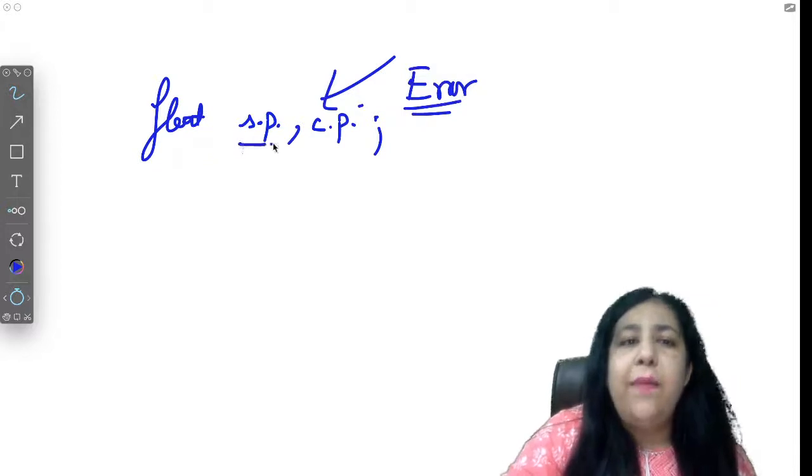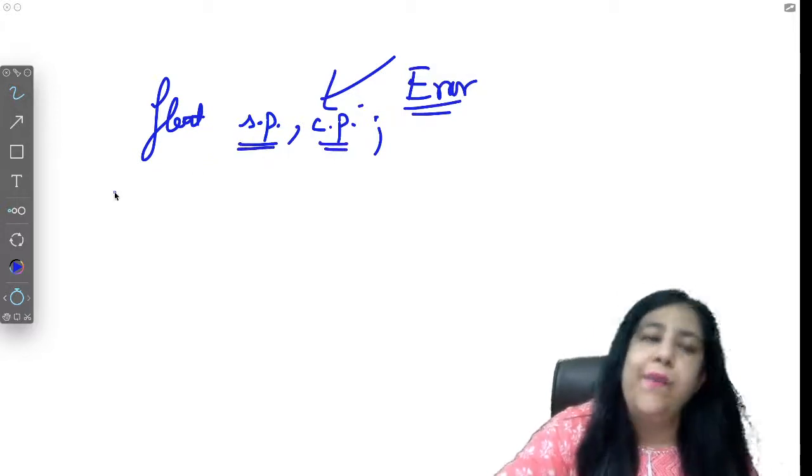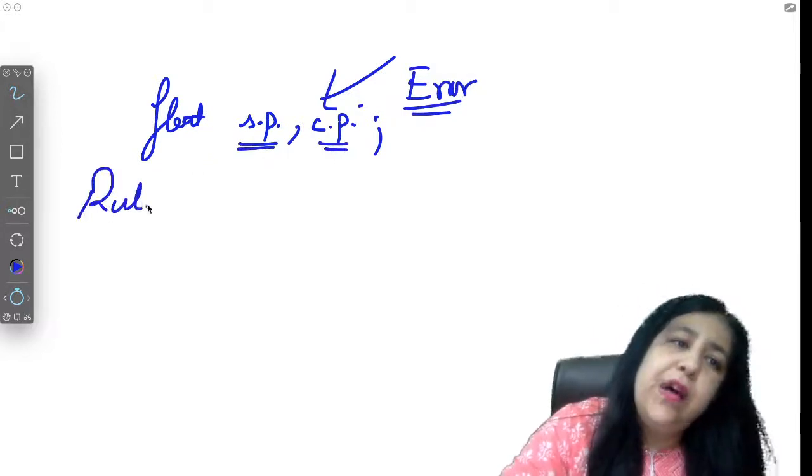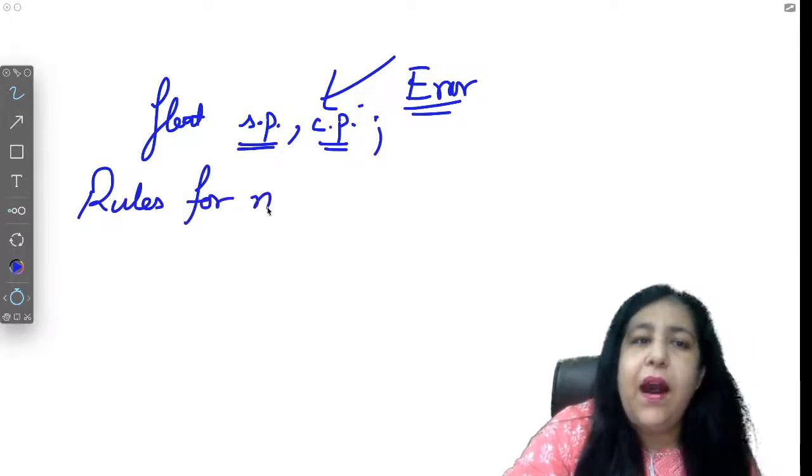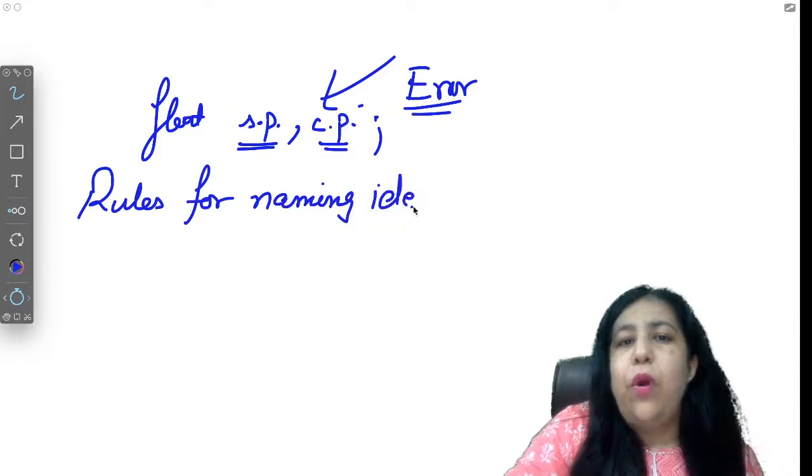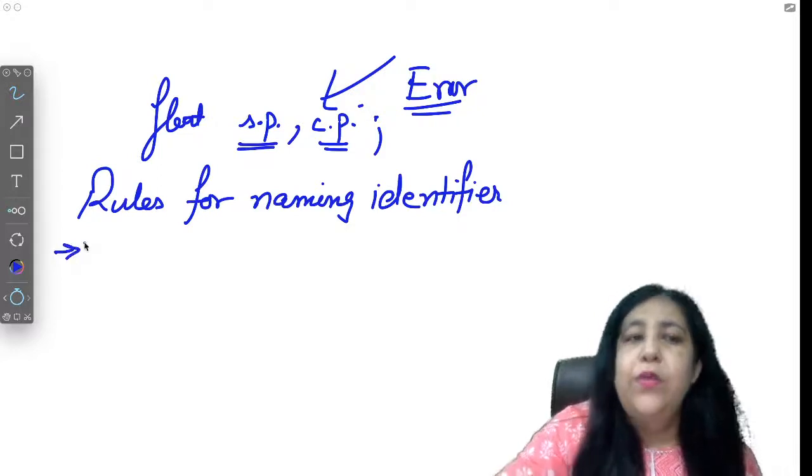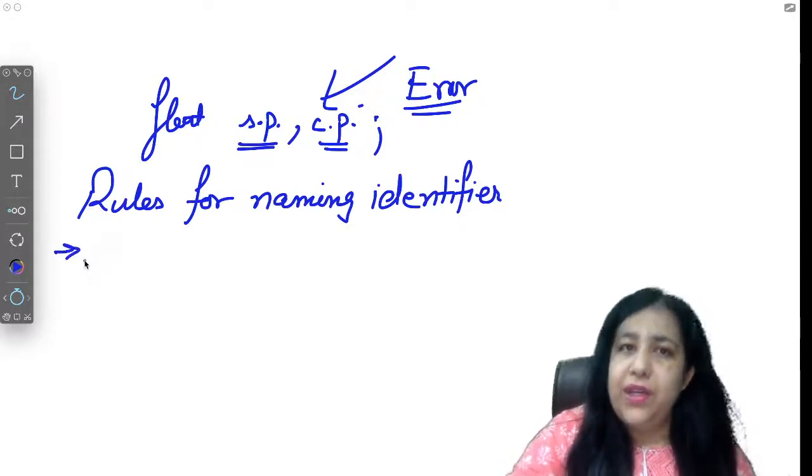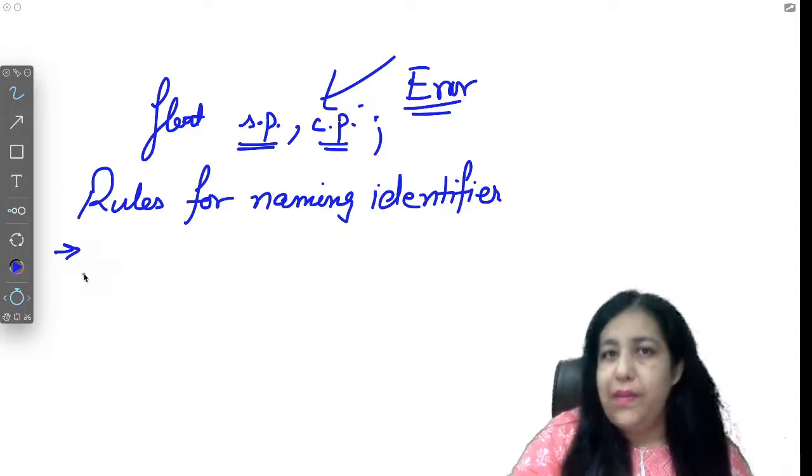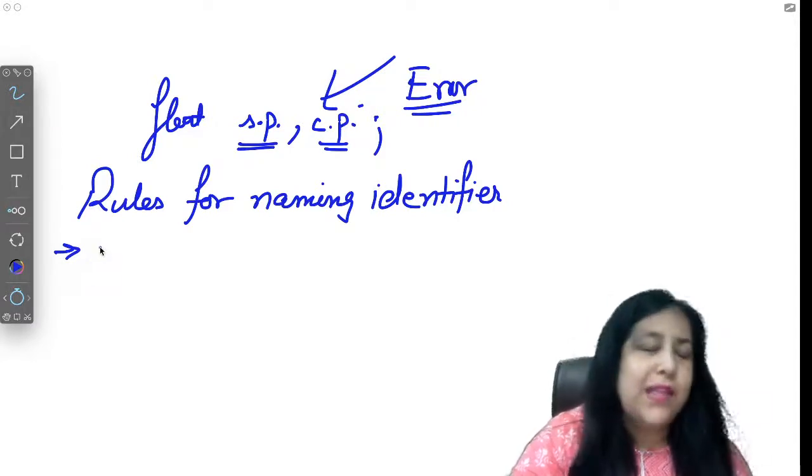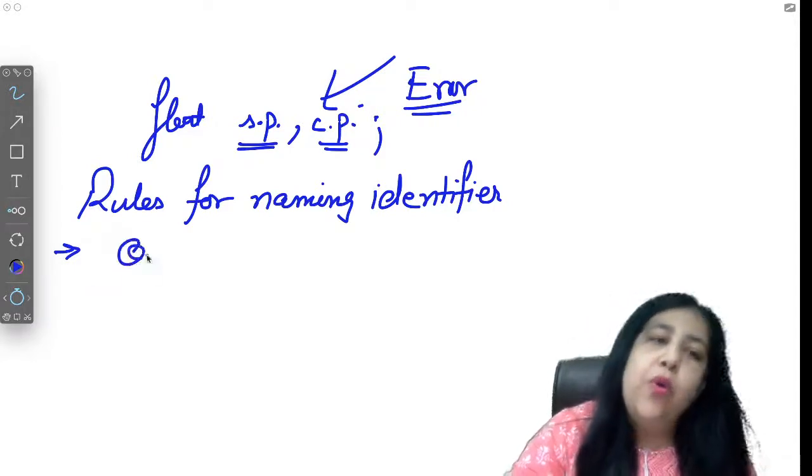You might think what mistake did I make? These names also have rules. So we have rules for naming identifiers. The variable names which we call identifiers have certain rules that you have to follow.